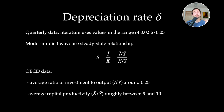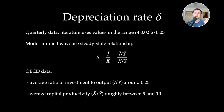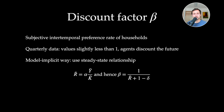We derive delta using a model-implicit approach by looking at the steady-state relationship for investment over capital. For OECD countries, the average ratio of investment to output is around 0.25 and the average capital productivity K-bar over Y-bar is roughly 10. We can then use this steady-state relationship to calibrate the value of delta.